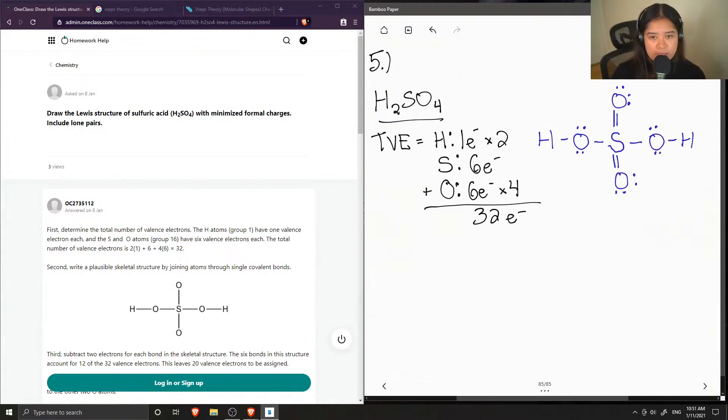So we can double check this, especially with the sulfur. So let's calculate the formal charge, just to double check. So formal charge is equal to the number of valence electrons minus the number of non-bonding electrons minus the number of bonding electrons divided by two.